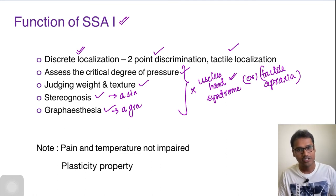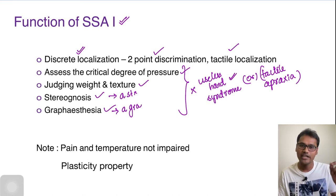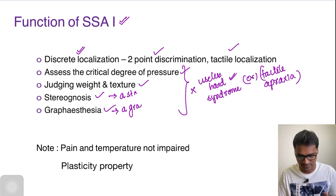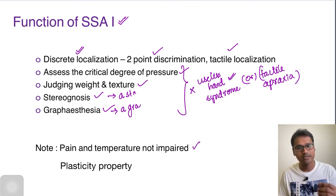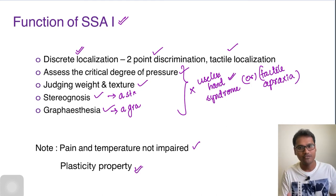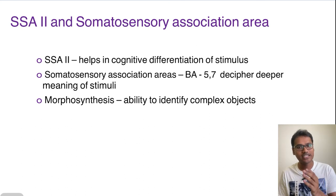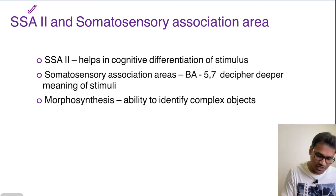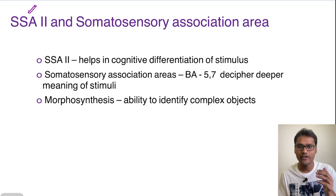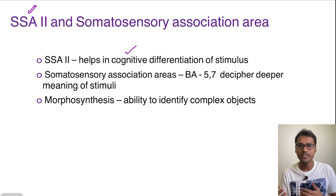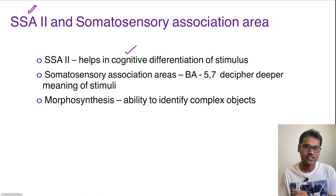We should make a special note: in pain and temperature discussion, I told you that most of the perception of pain and temperature is done by the thalamus itself. So pain and temperature are not impaired whenever there is a lesion in somatosensory area 1, and this area also has the plasticity property. Coming to the function of somatosensory area 2: they haven't identified much of its function, but it is thought to help in cognitive differentiation of stimuli — helping to understand different kinds of stimuli.